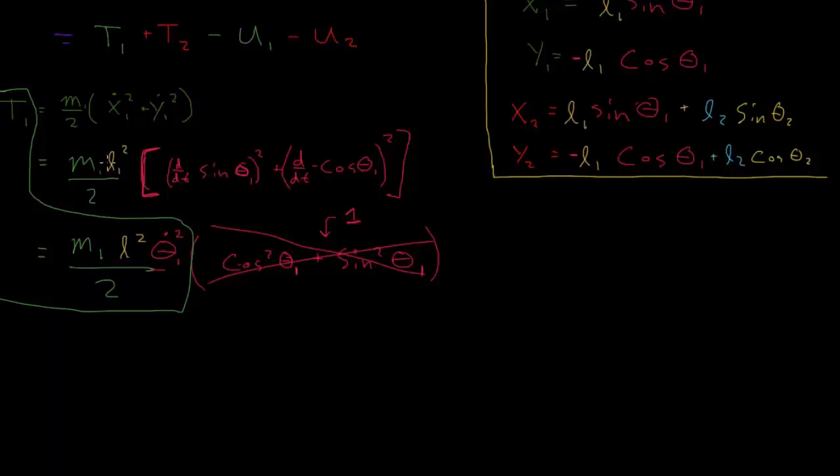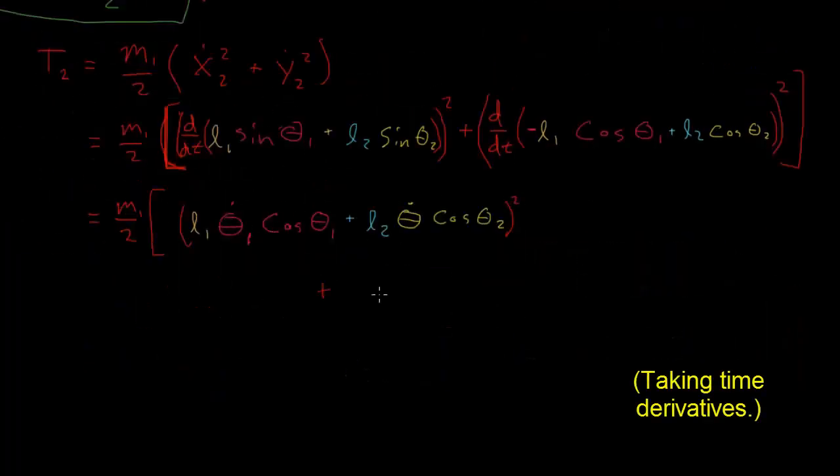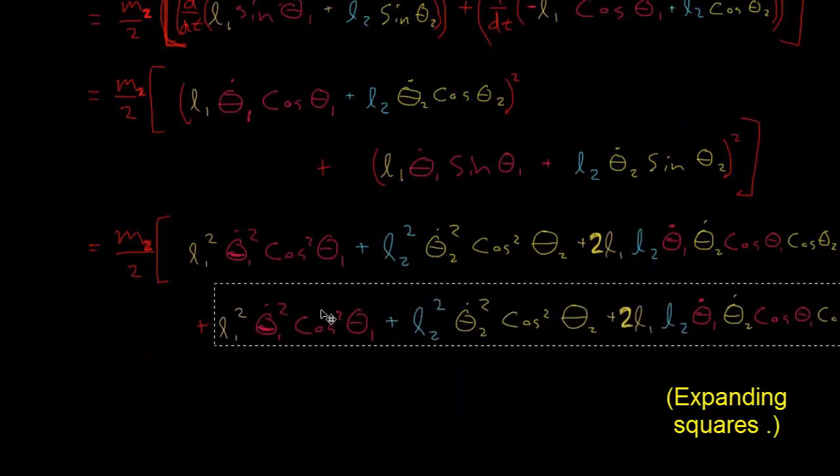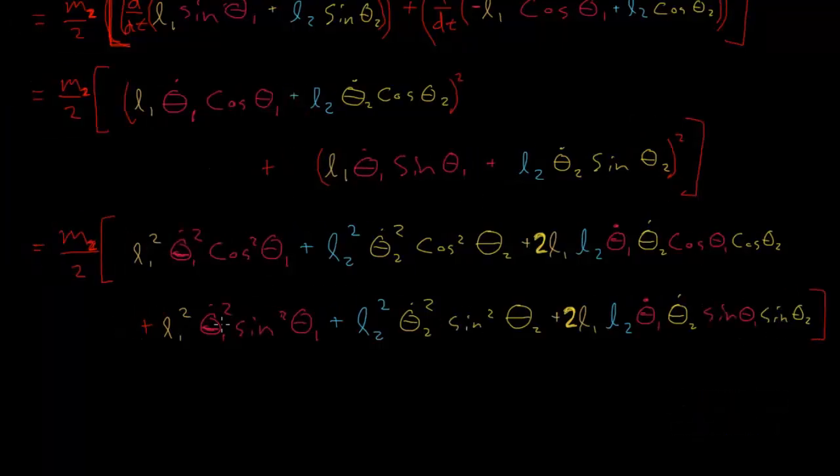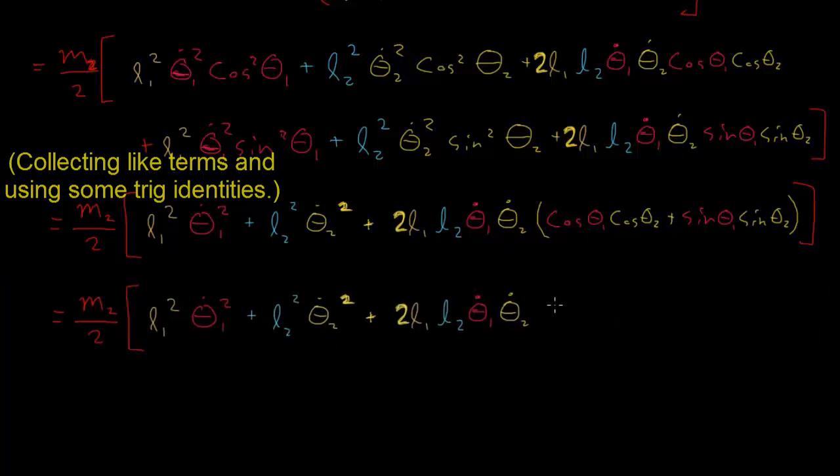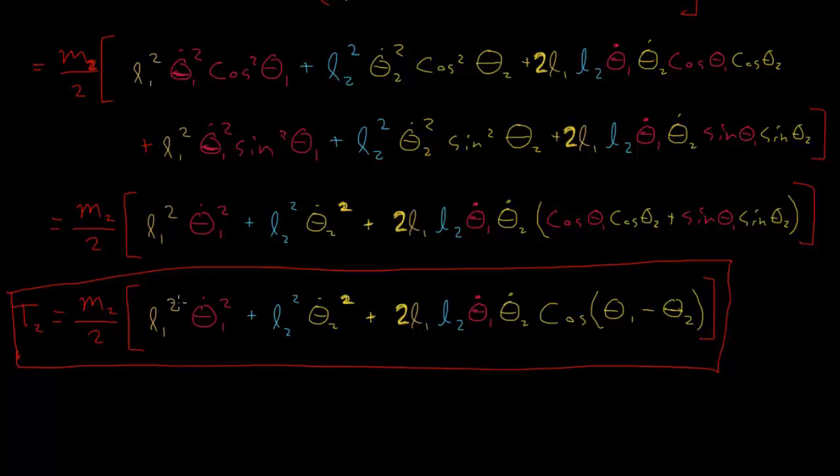And now let's look at t2. t2 will end up being our most complicated looking function, or piece of this Lagrangian. So this here is our t2, so I'll put this in a box. Here it is.